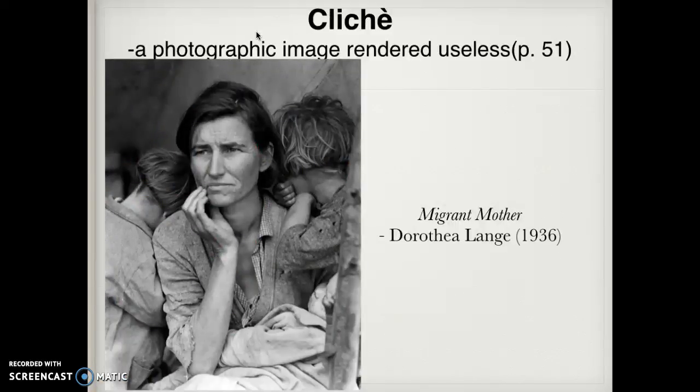Here's another example of where the photograph can go wrong — this idea of a cliché, where a photograph can be rendered useless through overuse. This photograph is supposed to be the most widely published photograph of all time. It's called 'Migrant Mother' by Dorothea Lange in 1936, depicting a pea-worker in the Depression and the anguish of a mother unable to provide for her kids. We see how photographs in history are used and used again until the power of them is destroyed — similar to how Holocaust images can become numbing through repetition.